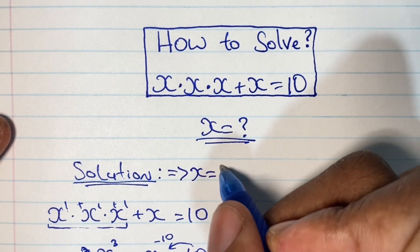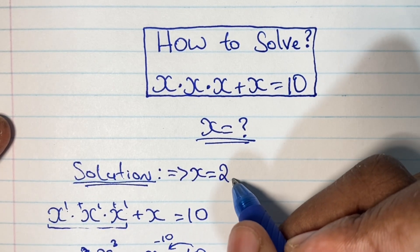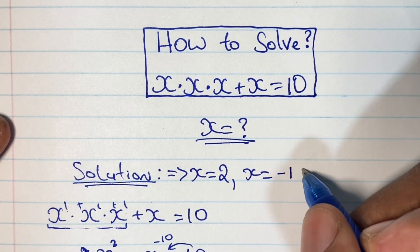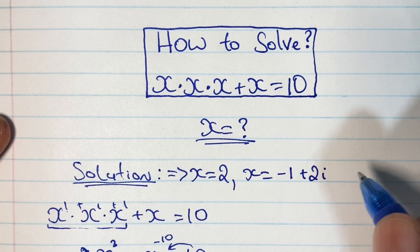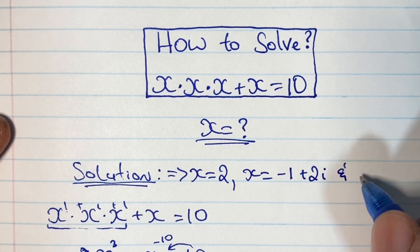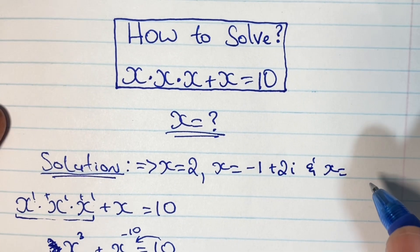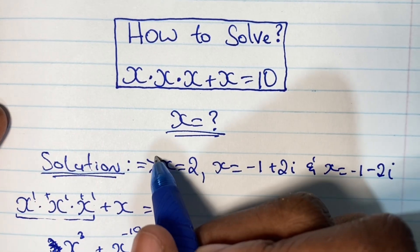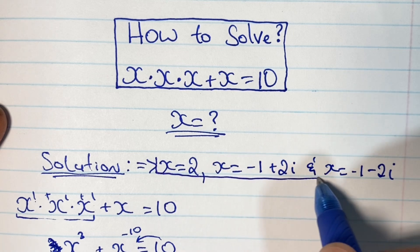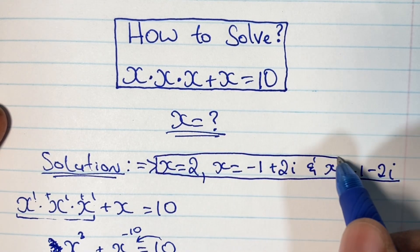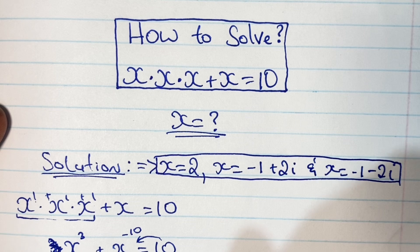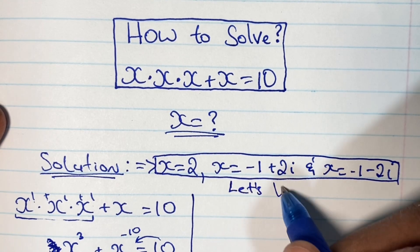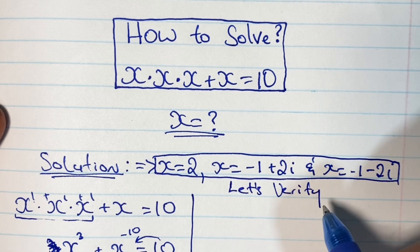So here are our three solutions for x. The first solution is x equals 2. The second solution is x equals negative 1 plus 2i. The third solution is x equals negative 1 minus 2i. We have two complex solutions and one real solution.